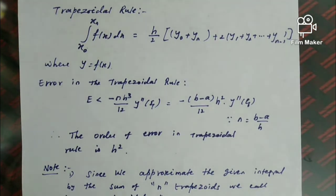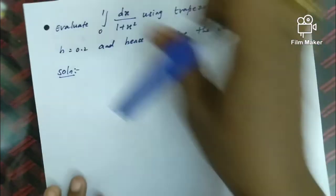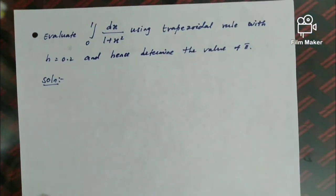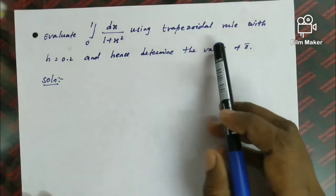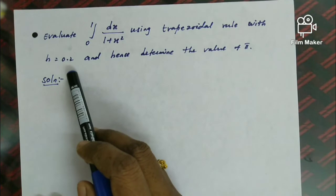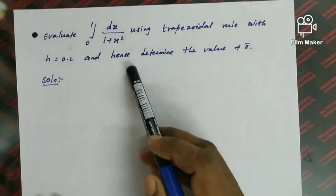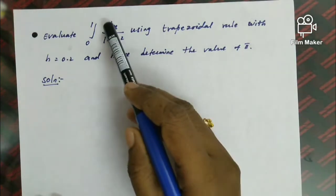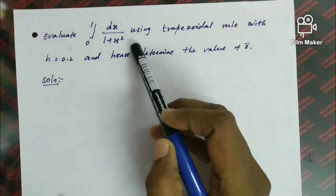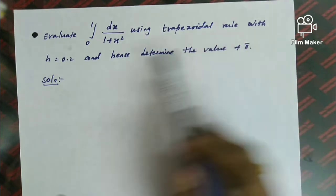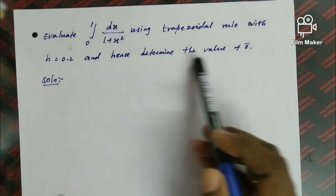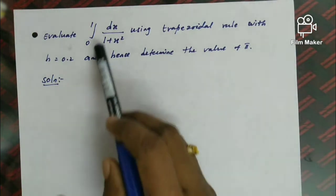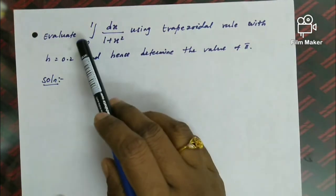Now we move to problems based on the Trapezoidal Rule. First question: evaluate the integral from 0 to 1 of dx/(1 + x²) using the Trapezoidal Rule with h = 0.2, and hence determine the value of pi. The question has two parts: first, evaluate the integration; second, determine the value of pi.